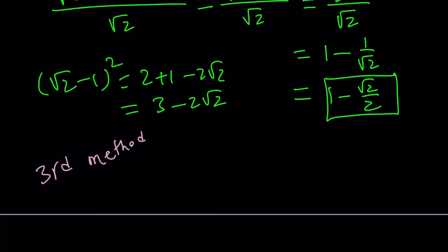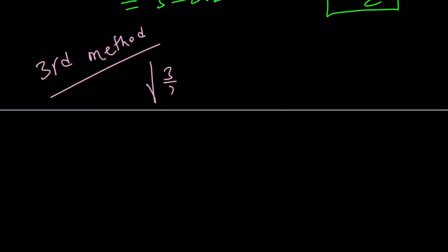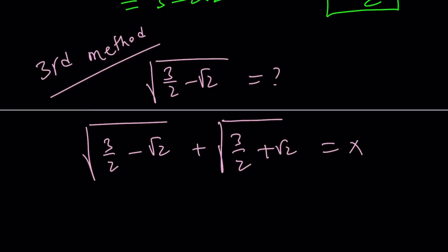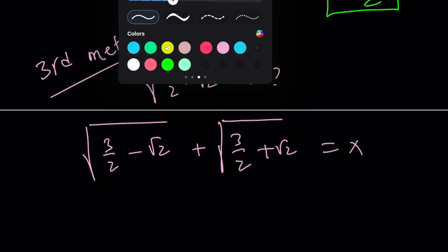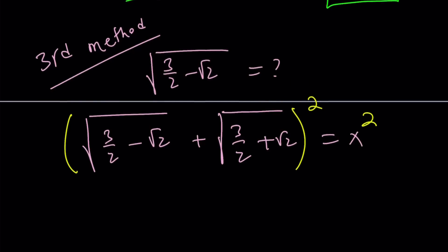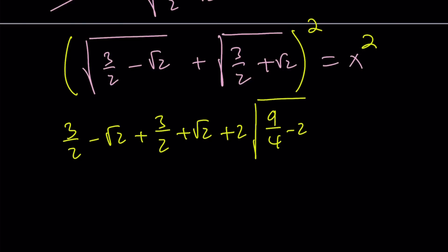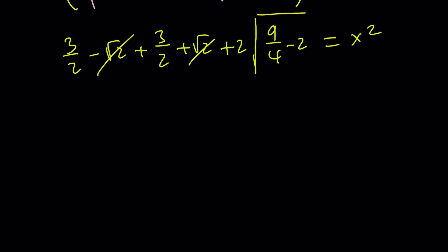Here's the third method. Our expression is the square root of 3 halves minus root 2. To simplify this, I'm going to think about the conjugate of this expression. The conjugate is basically you just change the sign. I'm going to add these two conjugates and set it equal to x. Squaring both sides, on the left we get 3 halves minus root 2 plus 3 halves plus root 2 plus 2 times the square root of 9 fourths minus 2. Root 2 cancels out, 3 halves plus 3 halves is 3, and 9 fourths minus 2 is 1 fourth. The square root of 1 fourth is 1 half, and 2 times 1 half is 1.